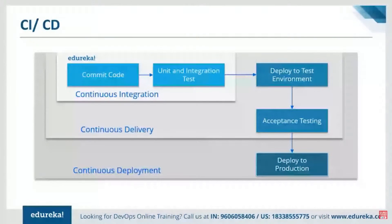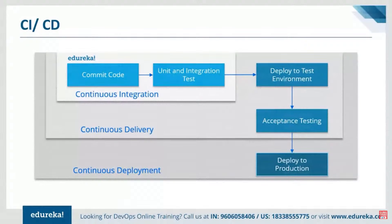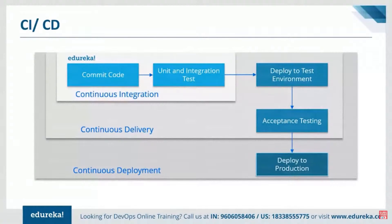Once the application is automatically deployed to a test environment to perform user acceptance testing (UAT), it becomes continuous delivery. Continuous deployment goes one step further — deploying the application after testing into production for release. However, continuous deployment is not considered a best practice because there may be additional checks, marketing steps, or approvals needed before release. Continuous delivery is what most companies strive to achieve today.